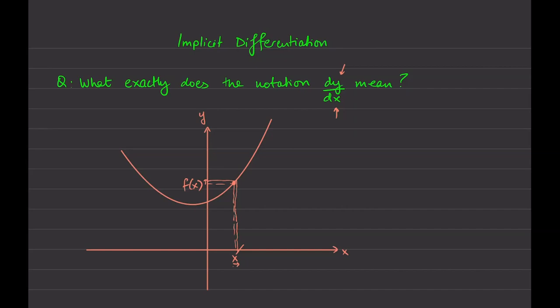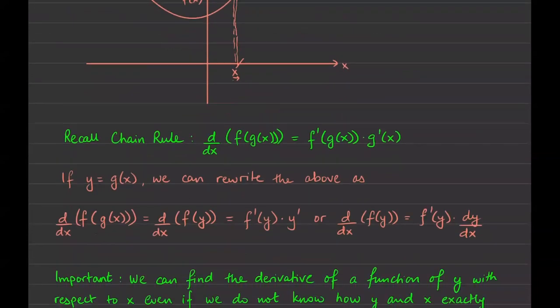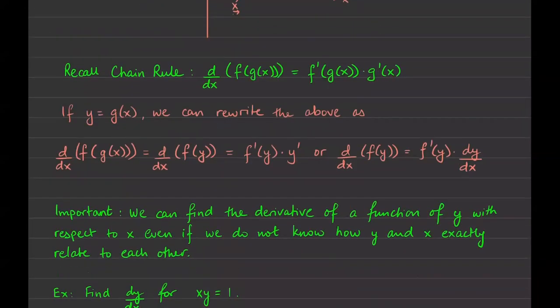That's really what a derivative actually is: how much is the output value of a function changing if we ever so slightly maneuver the input value? Now, this might seem unrelated, but it is, and I hope it makes sense a little bit in the future. It would be good to review chain rule. Chain rule states that if we have the derivative of a composition of functions f of g of x, we find the derivative of the outside keeping the inside the same, times the derivative of the inside.